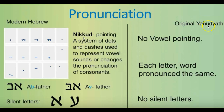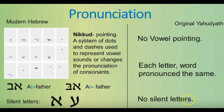In the original Yahudiith there is absolutely no vowel pointing. Each letter and word is pronounced the same. With the Bath, it's always pronounced as a B — it does not change from a B to a V. It's always the same letter, and there are no silent letters. Each of the letters in the Yahudiith language contains vowels.